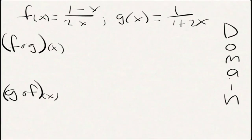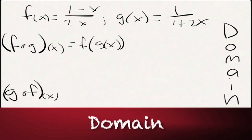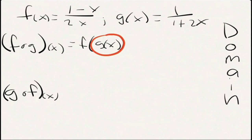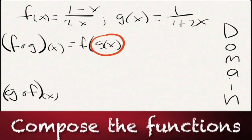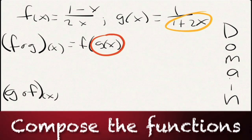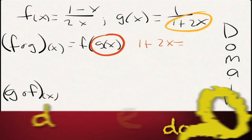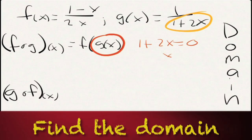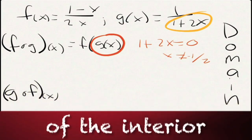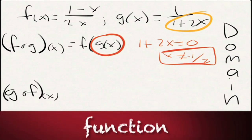Now let's look at the domain of the composition of rational expressions. For f(g(x)), the first thing that concerns us is the interior — g(x). We look at the domain of g(x) and know we can never divide by zero. So we ask: where is one plus two x equal to zero? Solving that down, we find x cannot equal negative one half. Subtract the one and divide by two — that's the first value we can't have.